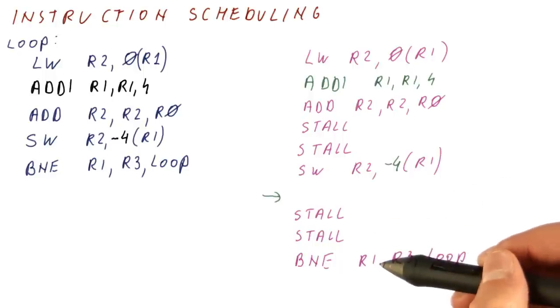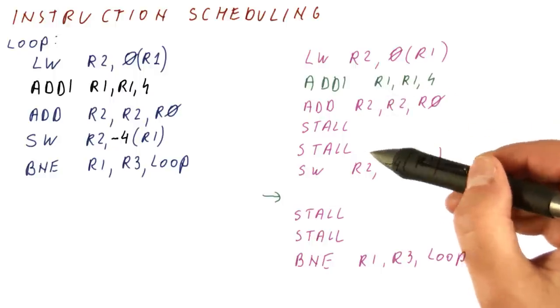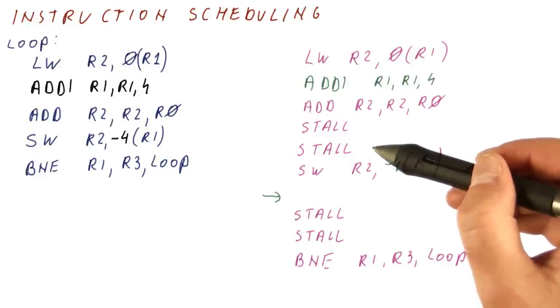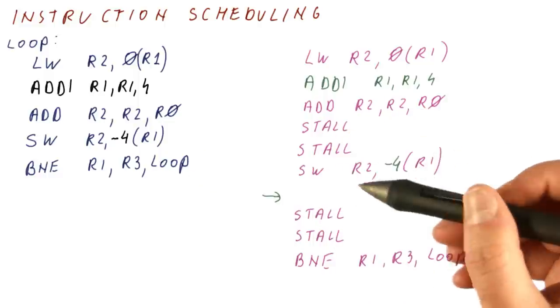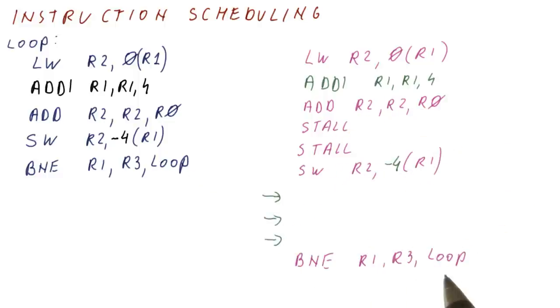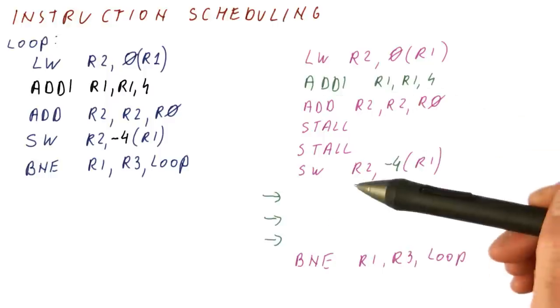Next, when can we do this branch? Well, the add has happened here. We cannot use R1 until one to the third cycle from there. So pretty much at any point after here, the branch actually is safe to go as far as R1 is concerned. Note that here we had to stall because of this. So we have just eliminated two more cycles here. And now we can do our branch. So pretty much we had plenty of stalls then. Now we have only two stalls and the rest of the loop body is scheduled.